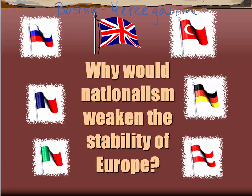Prior to World War I, there was a series of wars known as the Balkan Wars — one in 1912 and the other in 1913 — both fought over Ottoman lands as the Ottoman Empire was breaking up. Even though the Slavic groups in this region all share a similar language family, they had different alphabets and some language differences. Among the groups were the Serbs, Bosnians, Croats, and Slovenes.